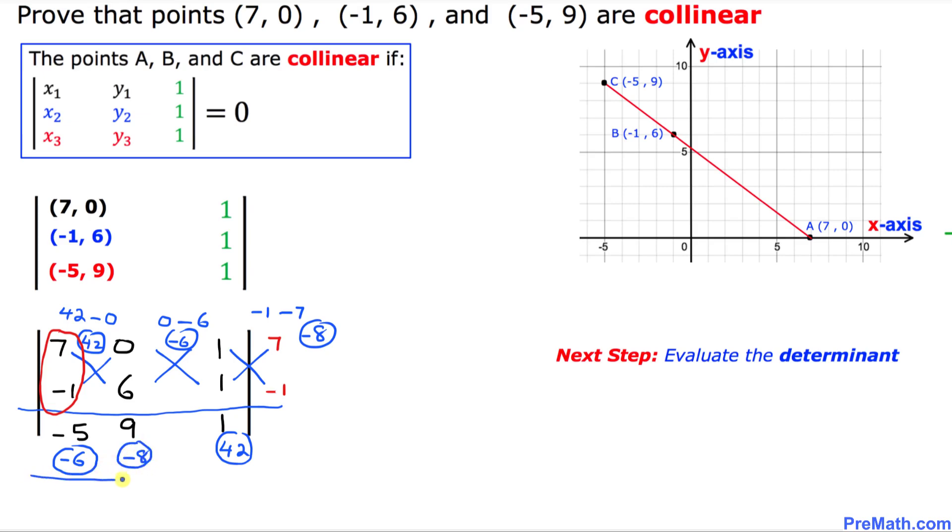And now finally, we are going to multiply these numbers first. And then we are going to add them up. So negative 5 times negative 6 is 30. And that's going to become negative 72 plus 1 times 42 is 42.